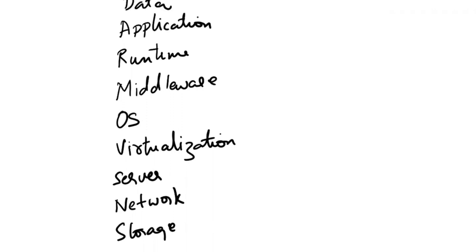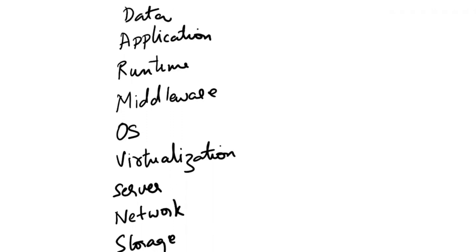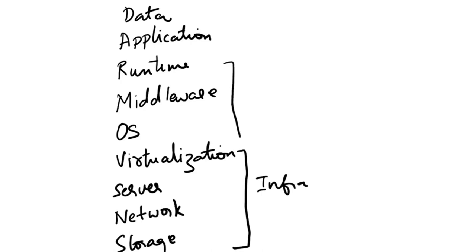So it looks like a lot of layers, but this can be grouped into three major sections. The hardware and virtualization software part is called the infrastructure. Then we have runtime, middleware, and OS — this is the software required to run the application, not the application itself — and this is the platform part. Then we have the application and data, which is our software.